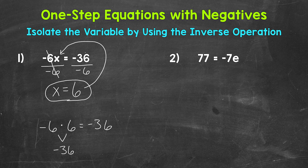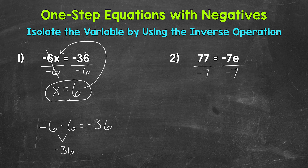Let's move on to number 2, where we have 77 equals negative 7e. We need to isolate the variable e. e is being multiplied by negative 7, so we need to undo that multiplication by using the inverse operation — the inverse of multiplication is division. Let's divide the right side by negative 7, and whatever we do to one side we must do to the other, so let's divide the left side by negative 7 as well. On the right side, we are multiplying by negative 7 and dividing by negative 7, so these negative 7s cancel out.